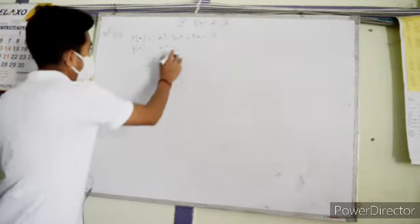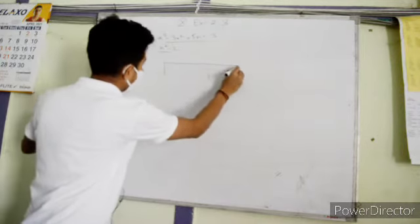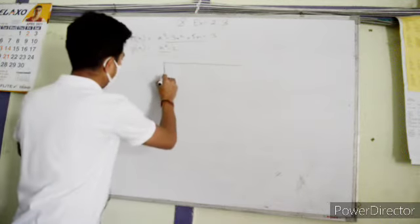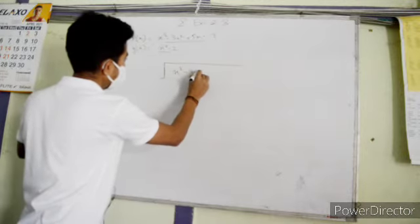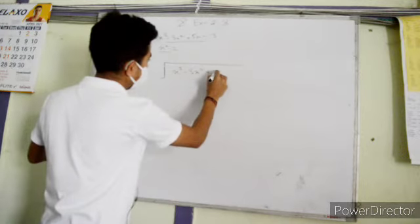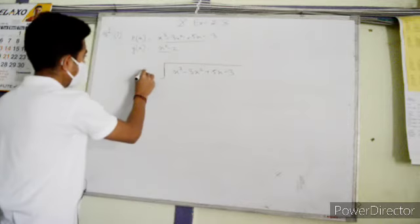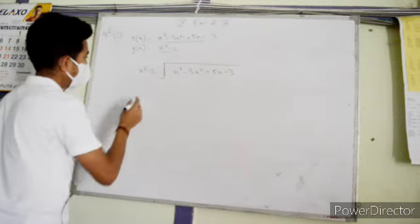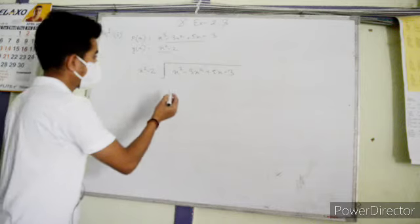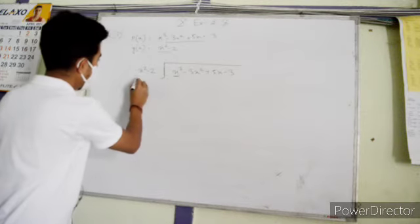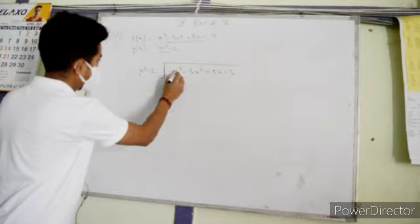So as we have done before in division: x³ minus 2x² plus 5x minus 3, divided by x² minus 2. We have to divide — first of all we check the first term. This is two terms; this is a factor of three and this is a factor of two, so we multiply by the factor of three.